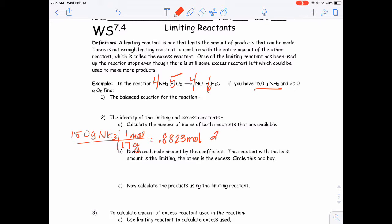For the oxygen, we have 25 grams of oxygen. Oxygen has a molar mass of 32 grams in a mole. And that comes out to be .7813 moles of oxygen.